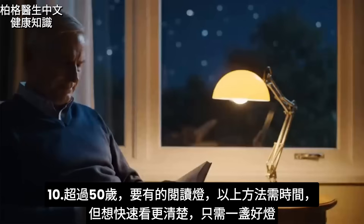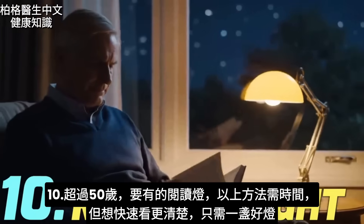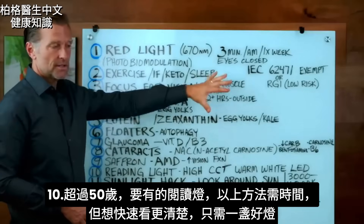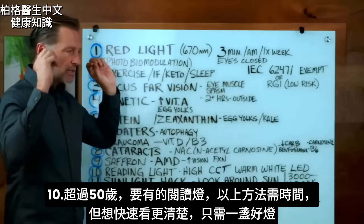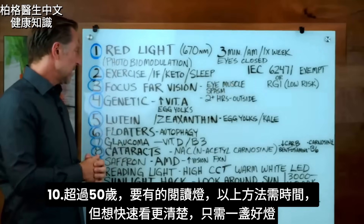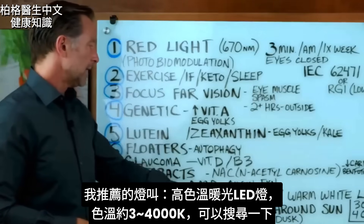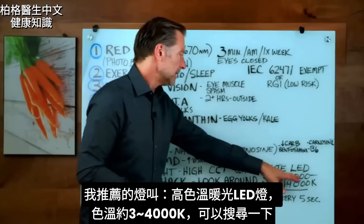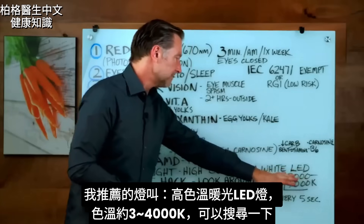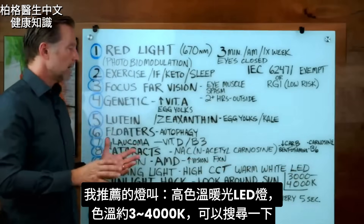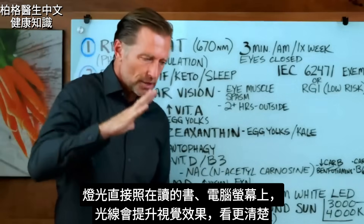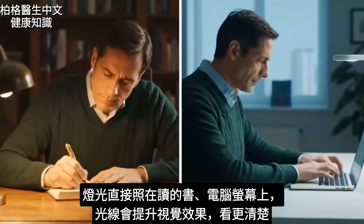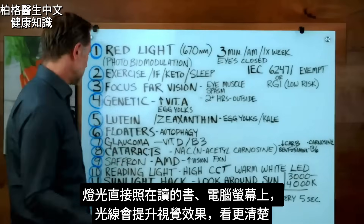Number ten: get a reading light if you're over the age of 50, because all of this is going to take some time. If you want to see a lot better quickly, just get a good light. I recommend the High CCT Warm Light LED between 3,000 and 4,000 K. You can do a search on that, and you want that light facing the surface, book, or computer you're looking at so the light is enhancing your ability to see.